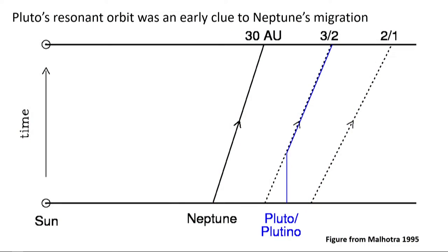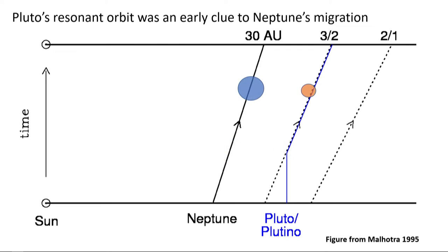The most obvious explanation would be actual movement of Neptune. This was recognized early on as evidence of migration. Raina Malhotra in the 90s made the point that if you thought about Pluto in its three-to-two resonance with Neptune, the best explanation for Pluto's dynamically excited orbit and the fact that it's in resonance would be if Neptune moves. In an early solar system — going up in time as we go up the slide — Neptune and Pluto have formed. Then planet migration starts and Neptune begins moving outward. As Neptune moves outward, the locations of these mean motion resonances also move outward. Eventually the resonance location overlaps with where Pluto formed, and you can capture bodies into these resonances. As Neptune continues to migrate, the object gets dragged along and dynamically excited. This was recognized as one of the very early clues that Neptune migrated in our solar system.